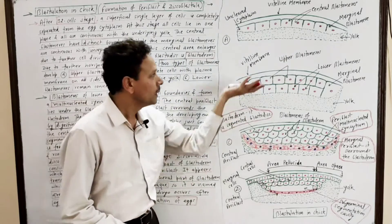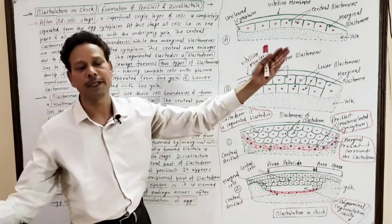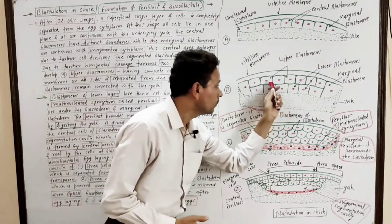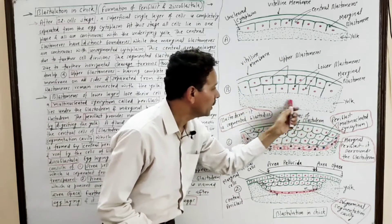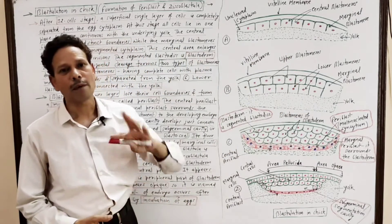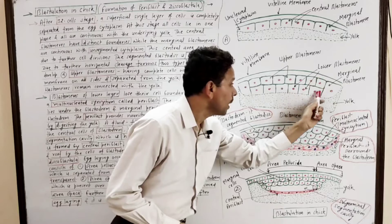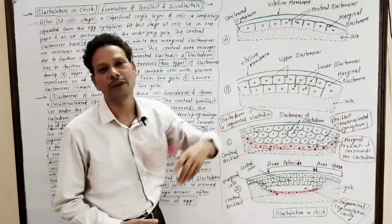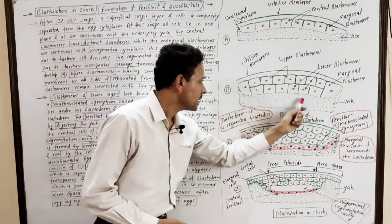The upper blastomers become separated — they are free from the yolk — while the lower blastomers remain connected with the yolk. The upper blastomers have well-distinct cell boundaries, whereas the marginal blastomers remain connected with the uncleaved cytoplasm in the central region.